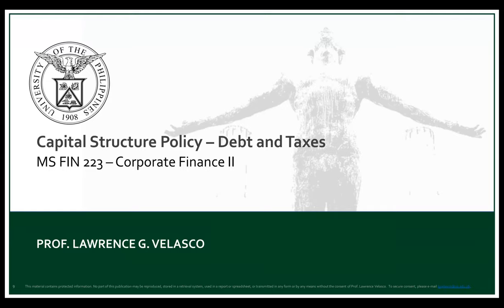In this video, we will discuss a continuation of capital structure policy. We want to relax the assumptions of the Modigliani and Miller theory of capital structure. The first introduction of market imperfection we will contend with is the impact of taxes on the Modigliani and Miller theory — will it still hold? We'll discuss the nuances of how taxes affect the optimality of capital structure.